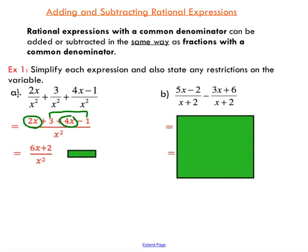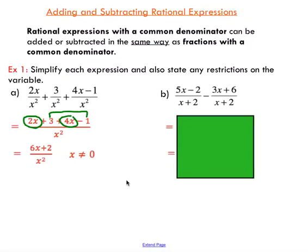Just a reminder about restrictions — it's always good practice to state any values that might make the expression invalid. If I were to substitute 0 for x, on top I'd get 6 times 0 plus 2, which is 2, but I'd be dividing by 0. You can't divide by 0 — anything divided by 0 will make your calculator explode in your face.